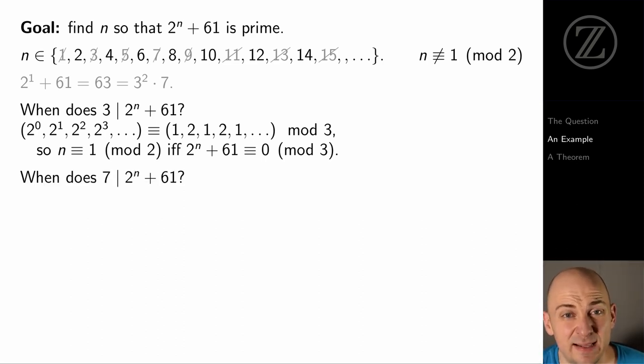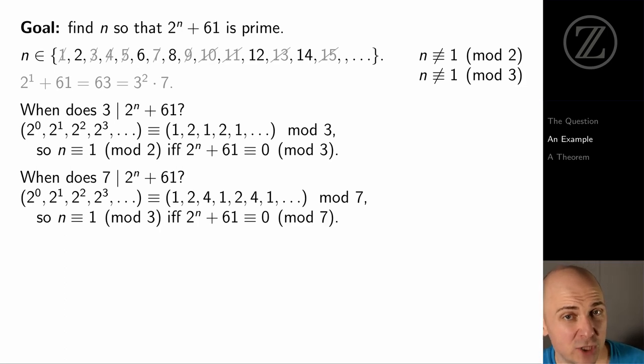Let's try to do the same trick, but instead of with 3, let's do it with 7. Let's look at powers of 2 but modulo 7. So that's looking at 2 to the 0, 2 to the first, 2 to the second, and so on, but modulo 7. That's 1, 2, 4, 1, 2, 4, 1, 2, 4, and so on. So the value of 2 to the n modulo 7 only depends on what n is modulo 3. And in particular, if n is 1 modulo 3, then 2 to the n plus 61 is exactly the same thing as 2 to the first plus 61. And again, it's a multiple of 7. So when n is 1 modulo 3, 2 to the n plus 61 can't possibly be prime. It's a multiple of 7.